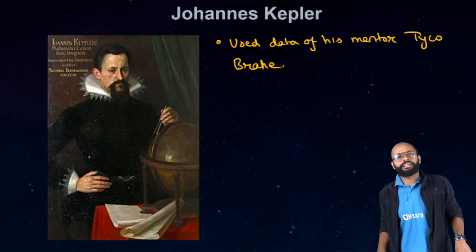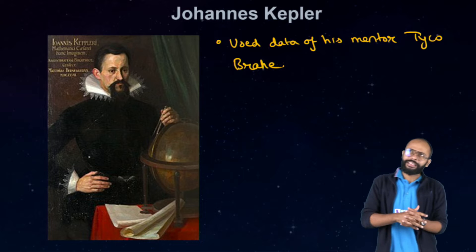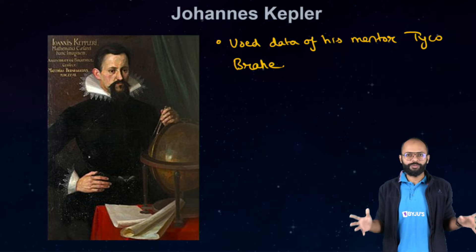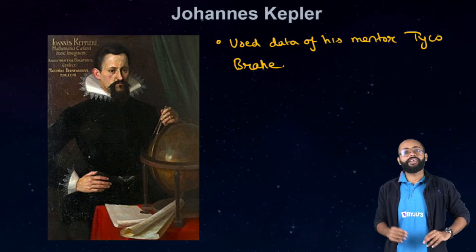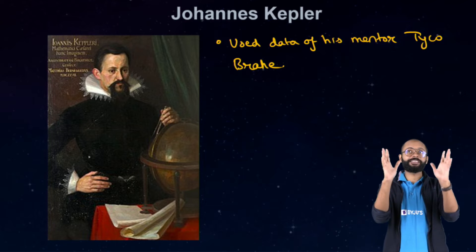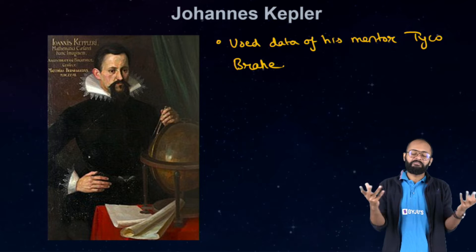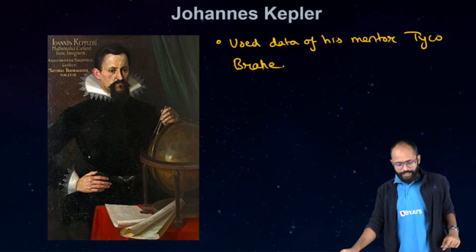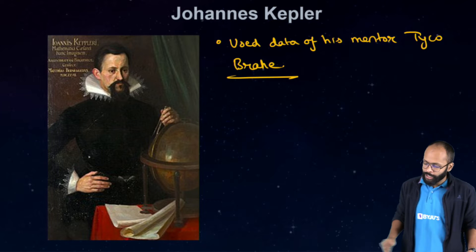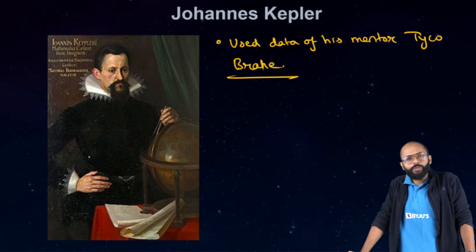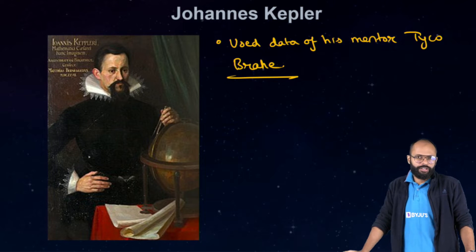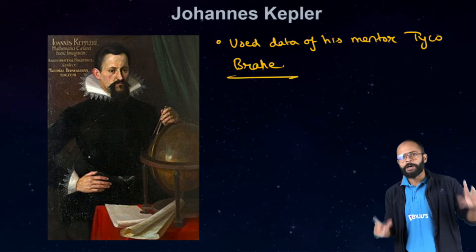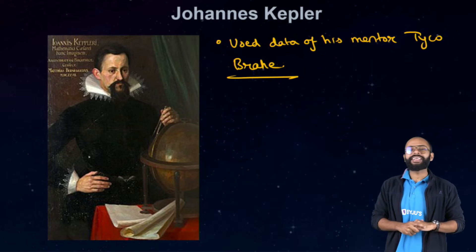Johannes Kepler, a German scientist — a very famous scientist, the last astronomer who studied the night sky without telescopes, before the telescopic era. He was looking at the sky with his naked eyes. He made some brilliant discoveries, using the data of his mentor Tycho Brahe, another very important astronomer.